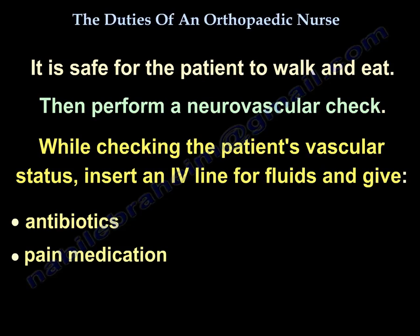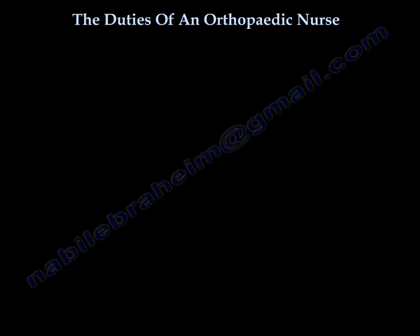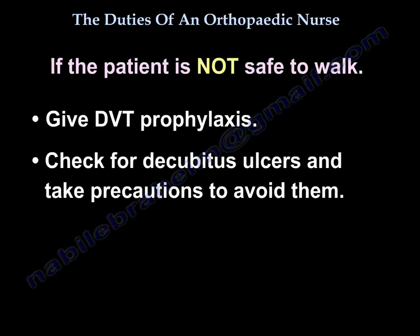If so, then perform a neurovascular check. While checking the patient's vascular status, insert an IV line for fluids and to administer antibiotics and pain medications. If the patient is not safe to walk, then make sure you give appropriate DVT prophylaxis, be it mechanical or chemical. Also, check for decubitus ulcers and take the necessary precautions to avoid them.